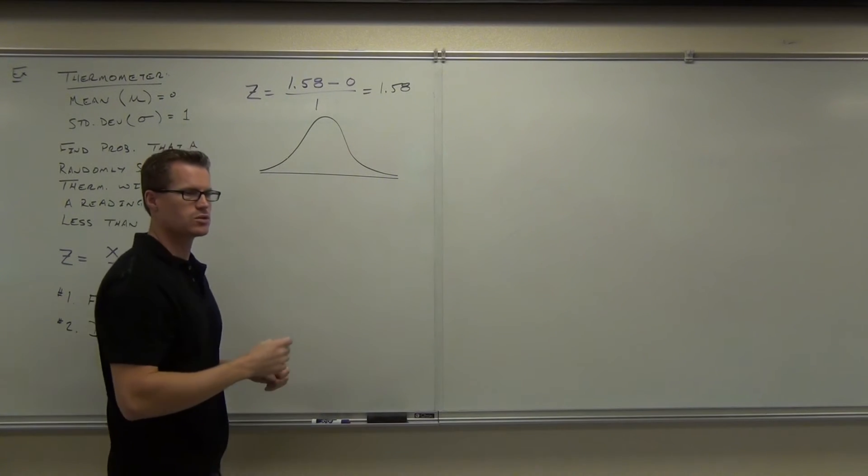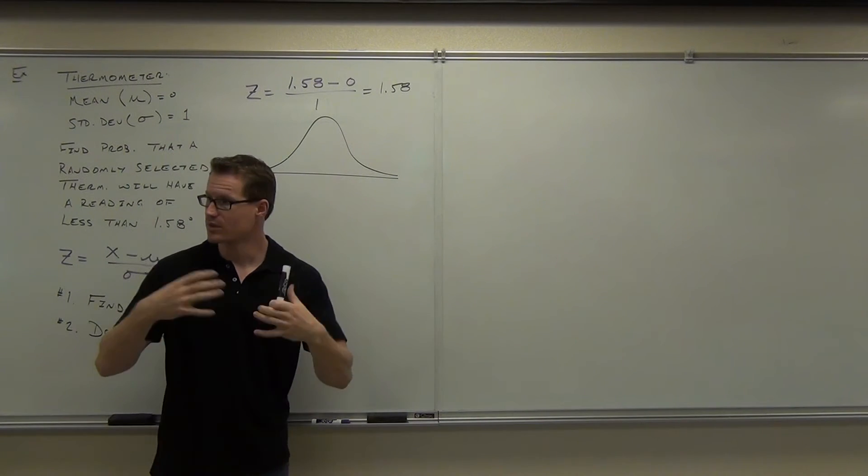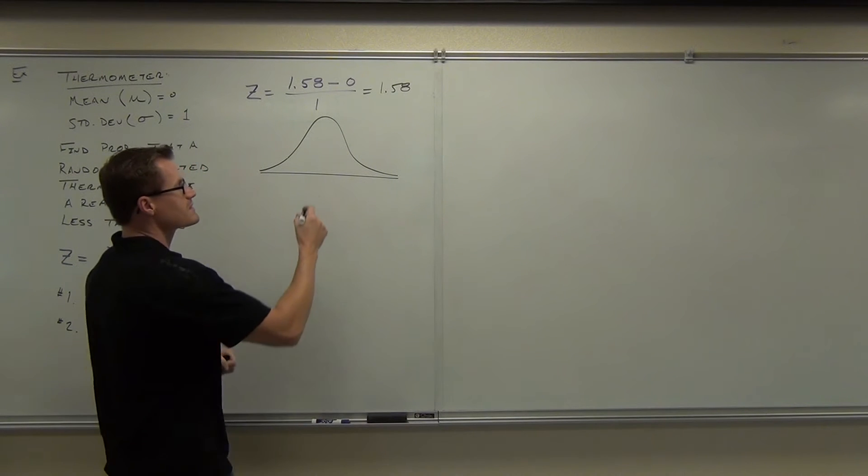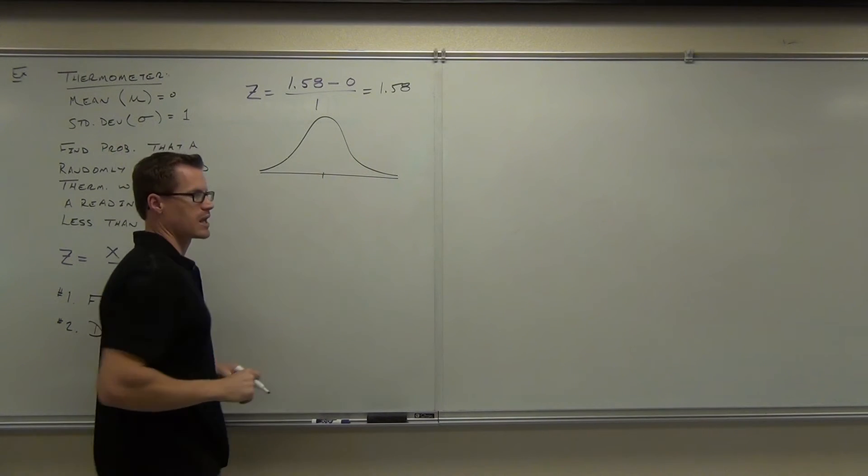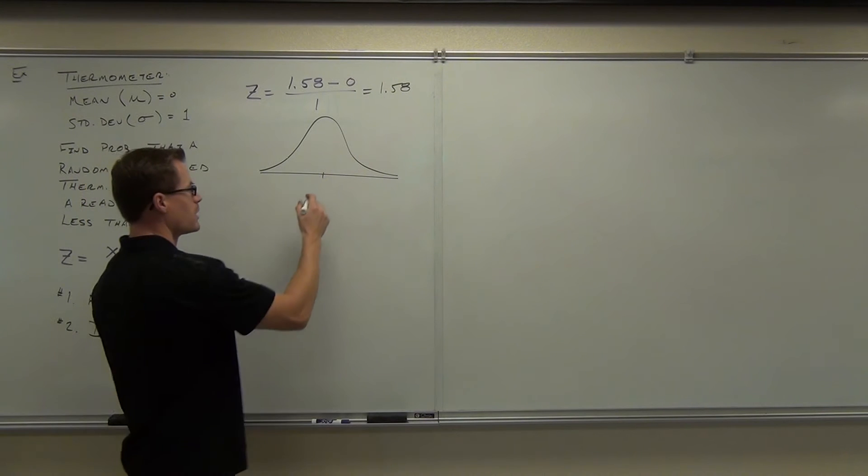The way you get from a normal distribution to a standard normal distribution, I've shown this to you three times now, is you use a z-score. The z-score maps the mean to zero. It maps the one unit standard deviation away to one and two and three for those values that are two and three standard deviations away. So now that we've talked about it, we're mapping a normal distribution, any normal distribution, into a standard normal distribution. That's what the z-score does. If you haven't written that down, write that down. What is the center value for a standard normal distribution? Zero. Good.